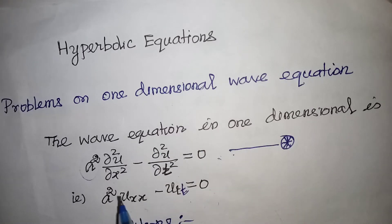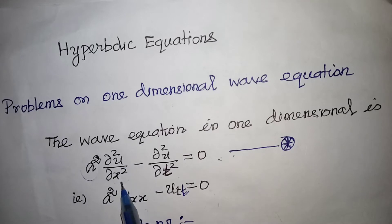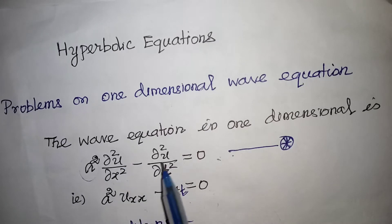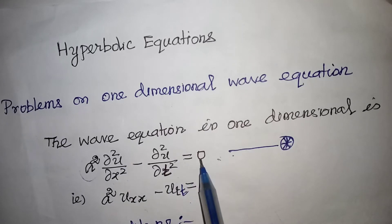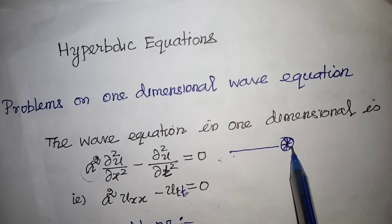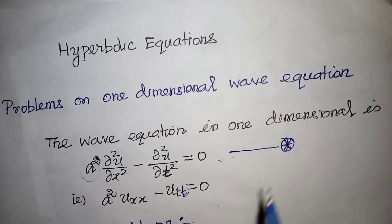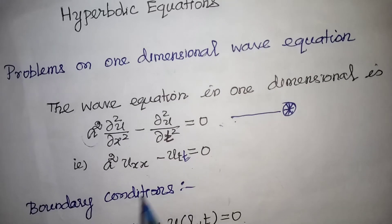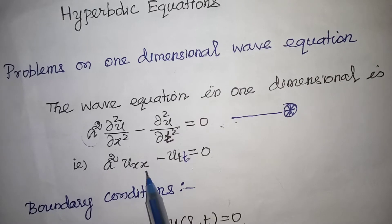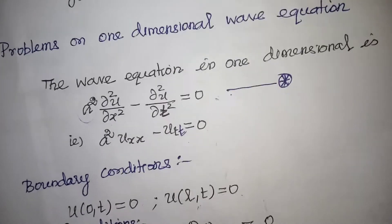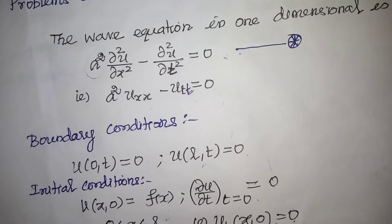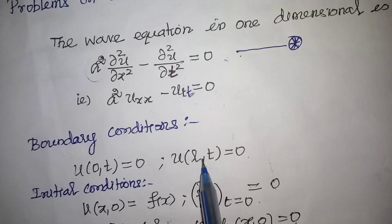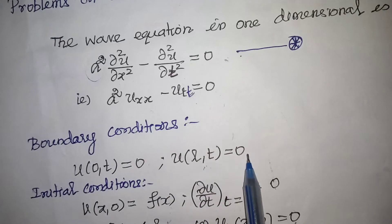The one-dimensional wave equation is of the form: a² × (∂²u/∂x²) − (∂²u/∂t²) = 0, which we call equation star. This can be written as a²·u_xx − u_tt = 0, with boundary conditions u(0,t) = 0 and u(l,t) = 0.